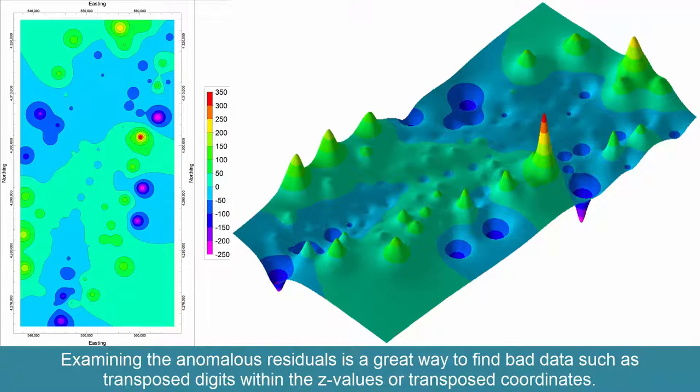Examining the anomalous residuals is a great way to find bad data, such as transposed digits within the z values or transposed coordinates.